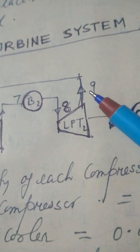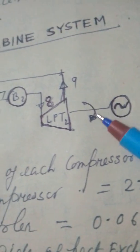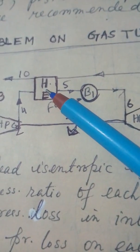Then, 8 to 9 is a low pressure turbine 2. This is an alternator. And from 9, it again goes to heat exchanger.